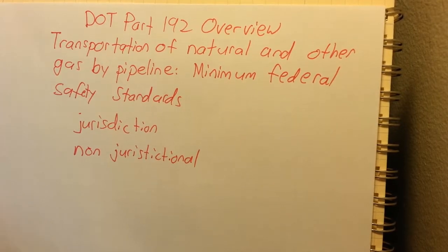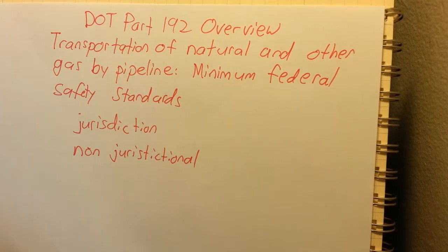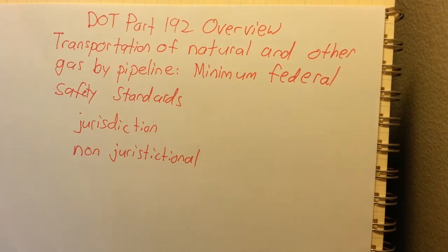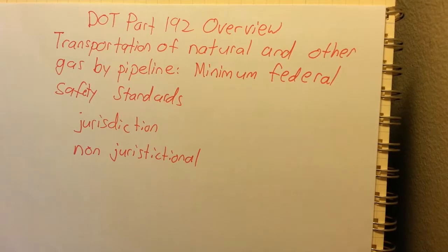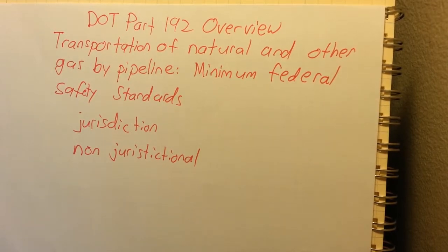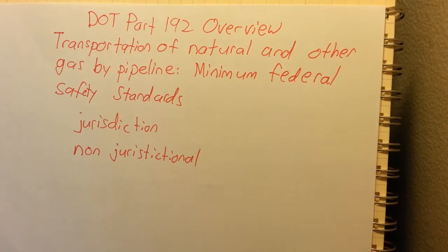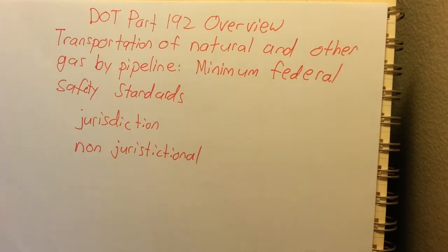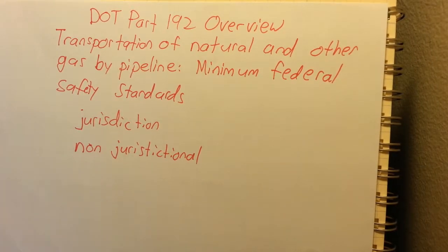So non-jurisdictional... under 192 part one it gives a whole different list of what this does not cover. So offshore gathering of gas and state waters, pipelines on the outer continental shelf, onshore gathering of gas so this does not include gathering lines, pipelines that operate at less than 0 psi, pipelines that service fewer than 10 customers, different things like that.